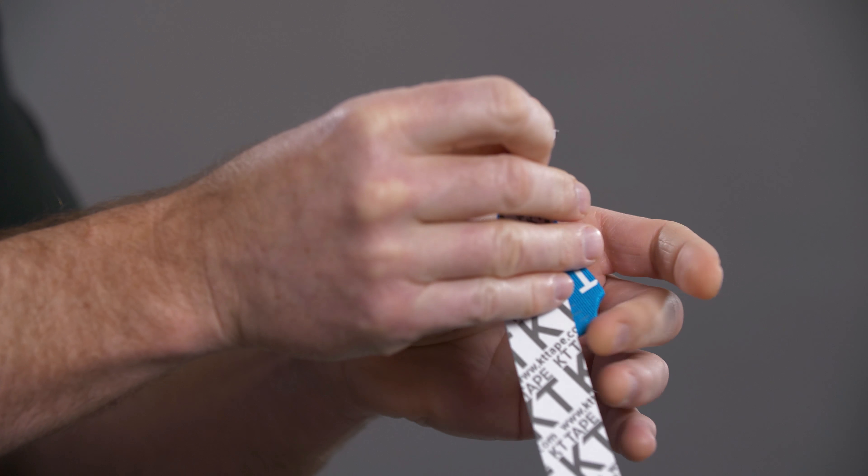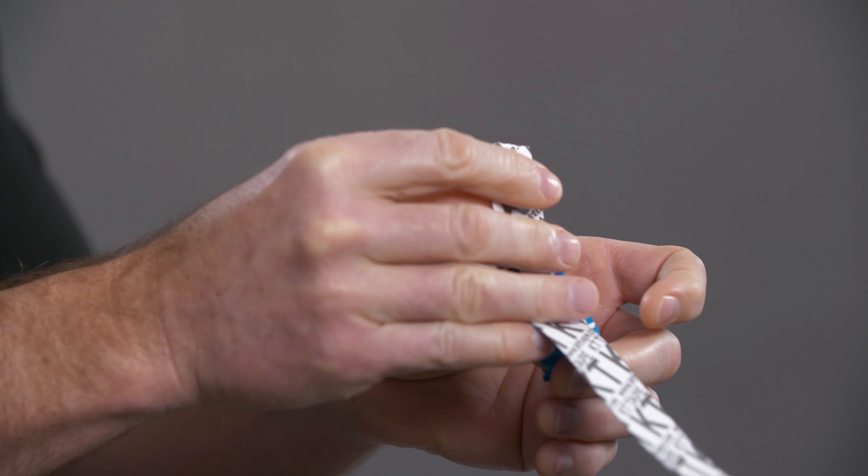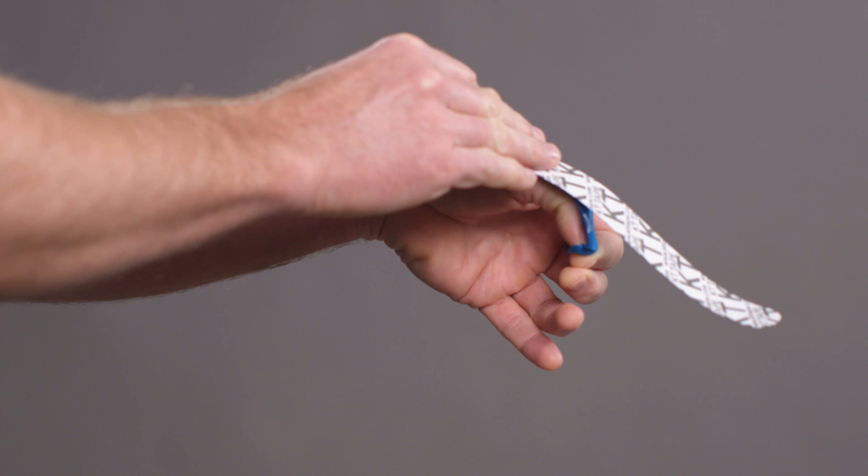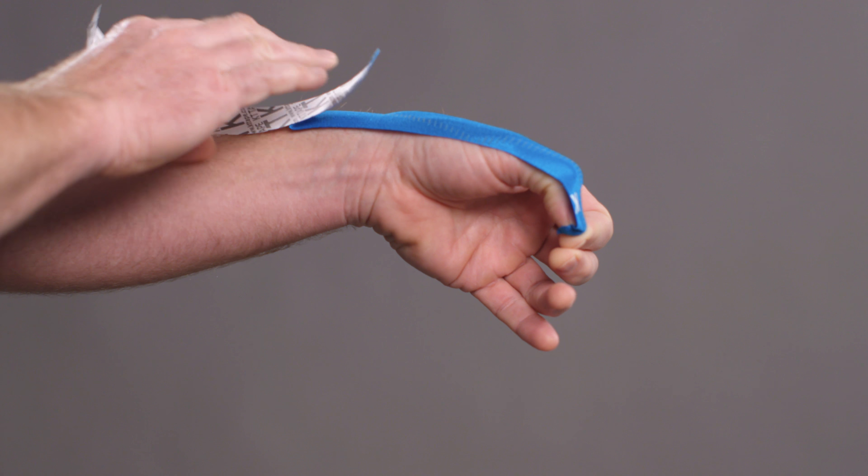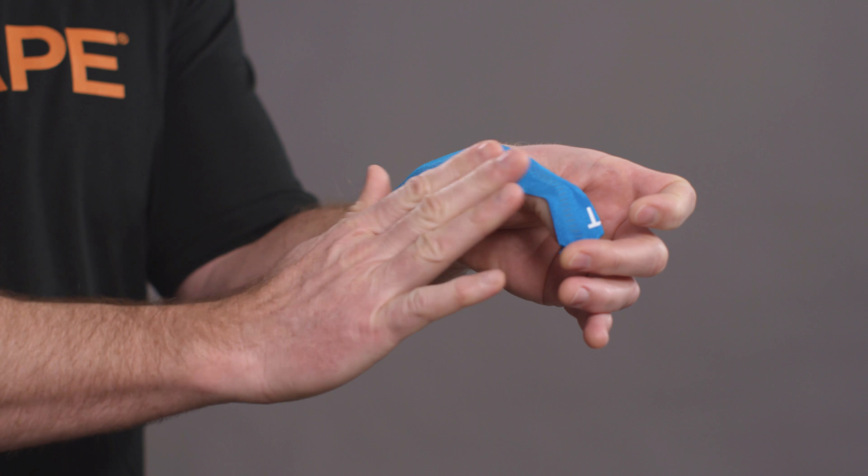Now while holding the anchor with your other fingers, gently tip your wrist down. With light stretch, direct the tape over the tendons of the thumb and wrist. Apply the last two inches with no stretch.